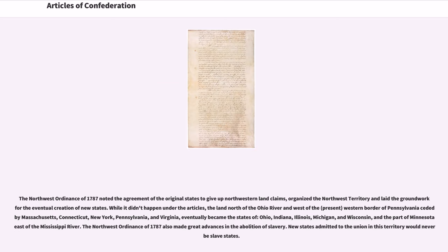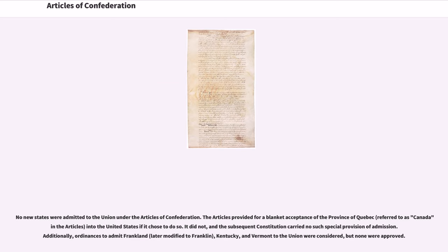The Northwest Ordinance of 1787 noted the agreement of the original states to give up northwestern land claims, organized the northwest territory, and laid the groundwork for the eventual creation of new states. The land north of the Ohio River and west of Pennsylvania eventually became the states of Ohio, Indiana, Illinois, Michigan, and Wisconsin, and the part of Minnesota east of the Mississippi River. The Northwest Ordinance of 1787 also made great advances in the abolition of slavery: new states admitted to the Union in this territory would never be slave states. No new states were admitted to the Union under the Articles of Confederation.